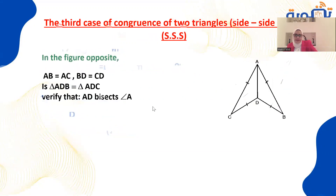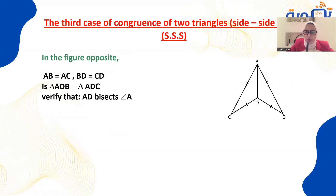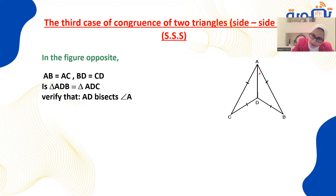The third case is Side-Side-Side (SSS). I need to teach you how to write the proof for congruent triangles. In this figure, AB equals AC and BD equals CD. We must prove that AD is the bisector of angle A.